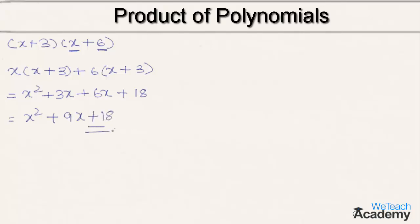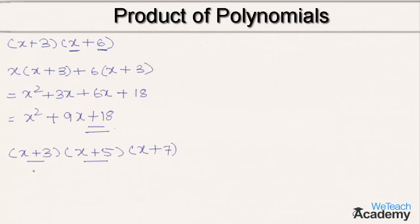Now let us consider another example. Here we have (x + 3) into (x + 5) into (x + 7). We have to find the product of three polynomials. First, let us consider the first two polynomials and find their product.